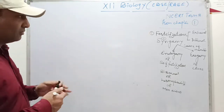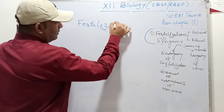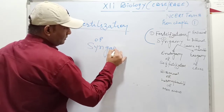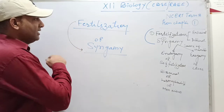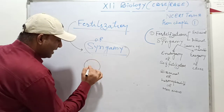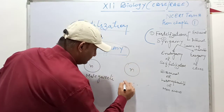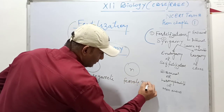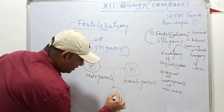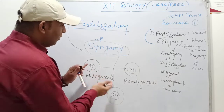The first term is fertilization, and then syngamy. In syngamy, only the following process takes place: the first cell — the male gamete — and the second cell, the female gamete — their pronuclei fuse and produce the zygote, which contains the diploid number of chromosomes. That condition is called syngamy — only the fusion of pronuclei is called syngamy.